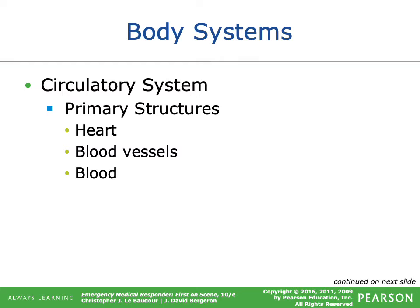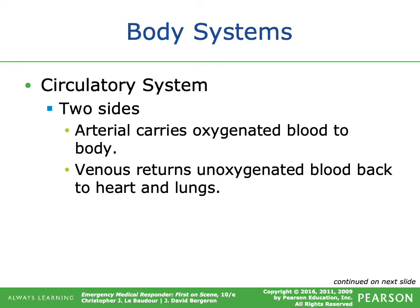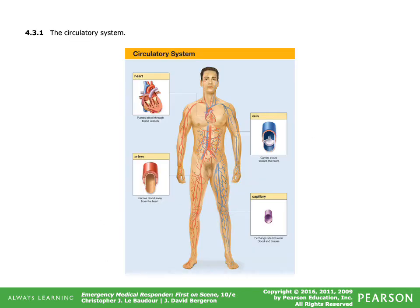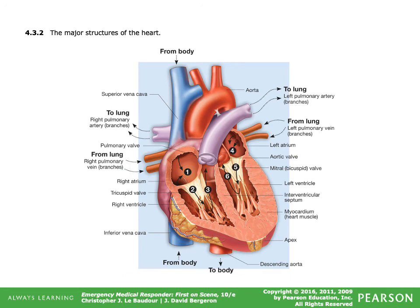The circulatory system includes your heart, blood vessels, and blood. It has two sides: the arterial side carries oxygenated blood to your body, and the venous side returns unoxygenated blood back. Functions are to carry well-oxygenated blood and other nutrients to the body's cells, and assist with the removal of waste and carbon dioxide from cells. Dysfunction of these structures leads to poor perfusion and the buildup of waste. In circulatory system figures, arteries are represented in red and veins in blue.